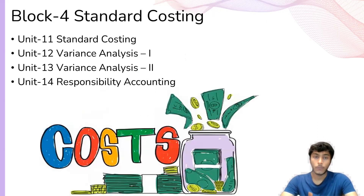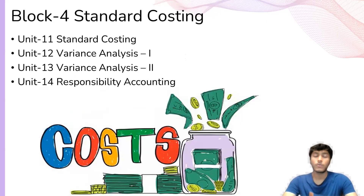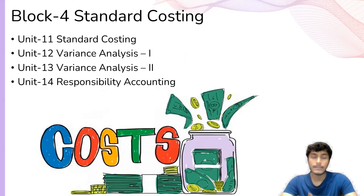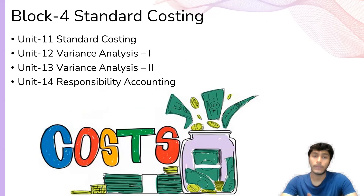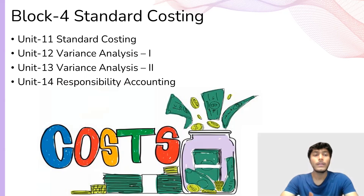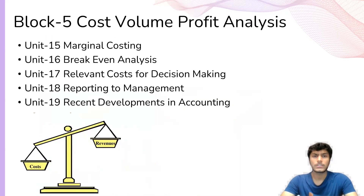Coming to block four, which is standard costing. Standard costing includes what are the deviations or variances — variance is nothing but the deviation from the outcome that we were expecting. So what is variance, what is standard costing, and also responsibility accounting — what are the ways in which we can do accounting in terms of a responsibility manner.